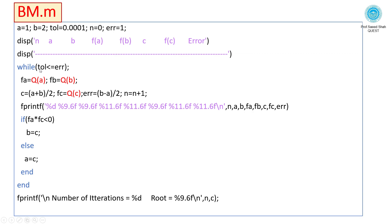Using while loop: tolerance less than or equal to error. fa = Q(a) calling Question here.